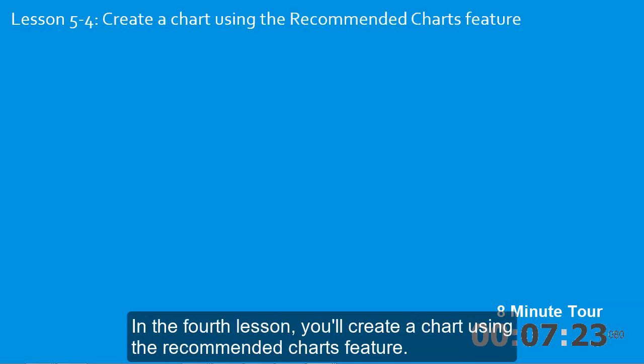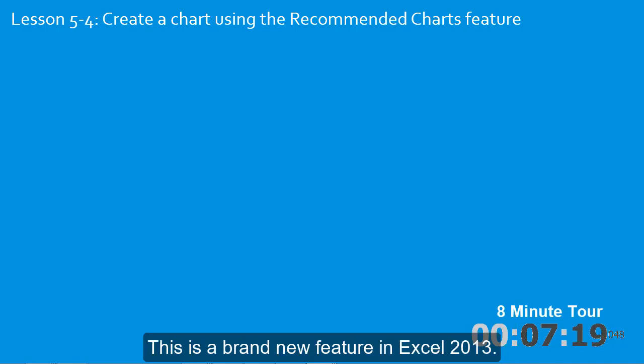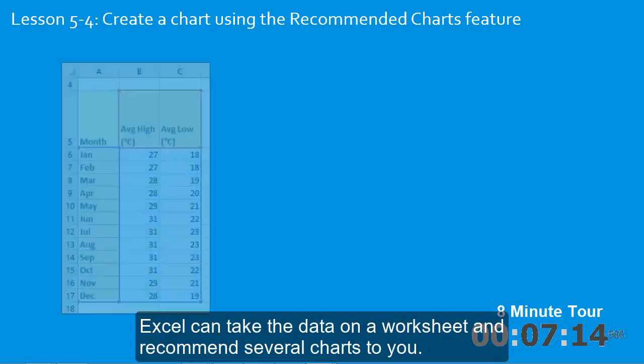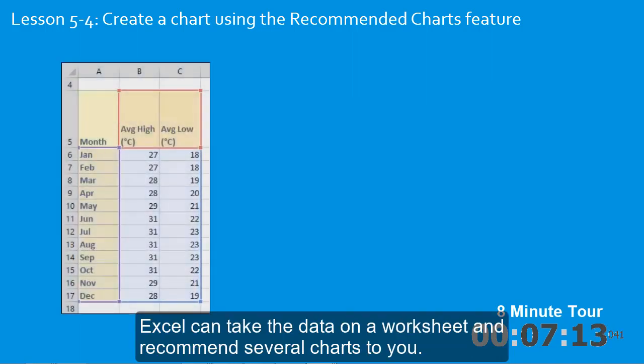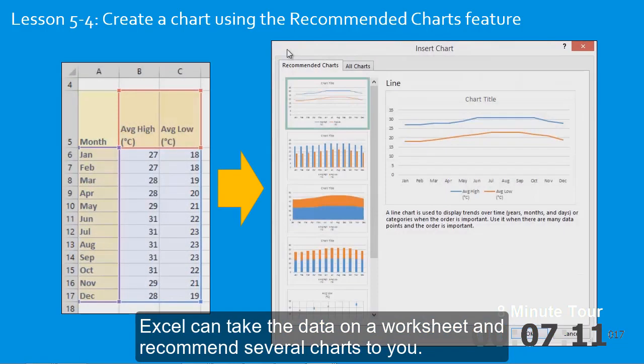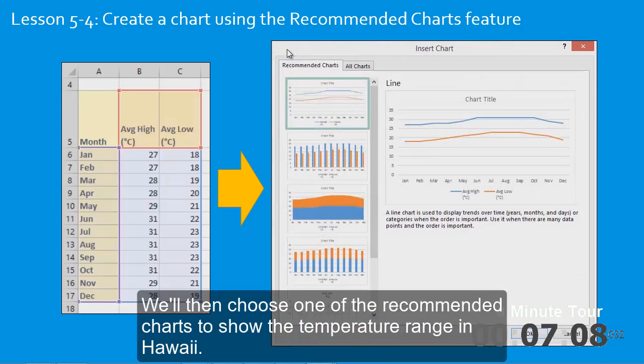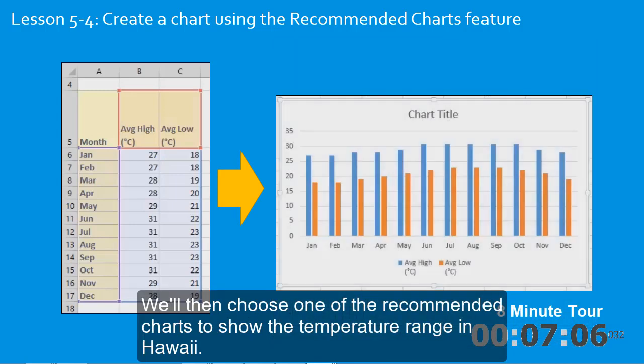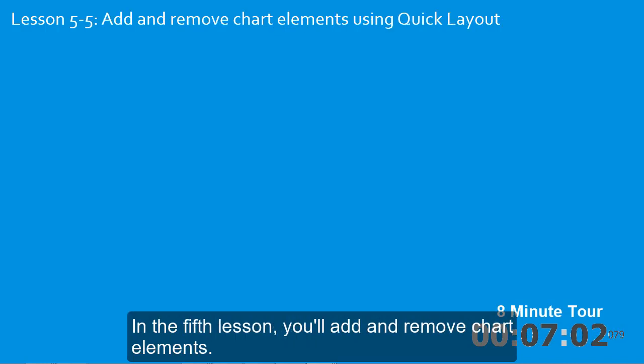In the fourth lesson you'll create a chart using the recommended charts feature. This is a brand new feature in Excel 2013. Excel can take the data on a worksheet and recommend several charts to you. We'll then choose one of the recommended charts to show the temperature range in Hawaii.